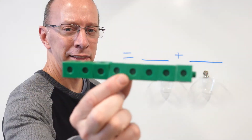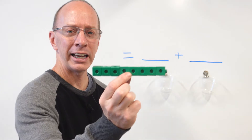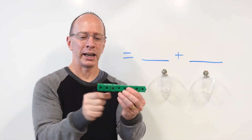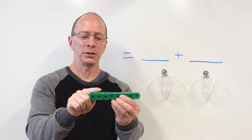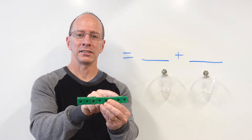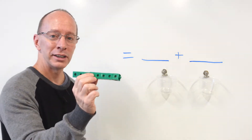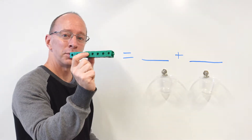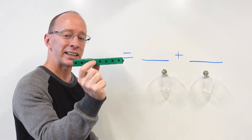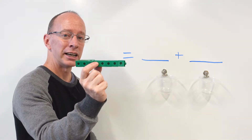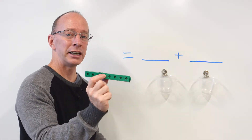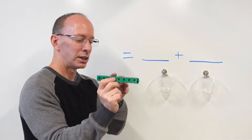Okay, right there I have eight cubes. I have one, two, three, four, five, six, seven, eight. And what I want to do is put these eight cubes into two equal groups.